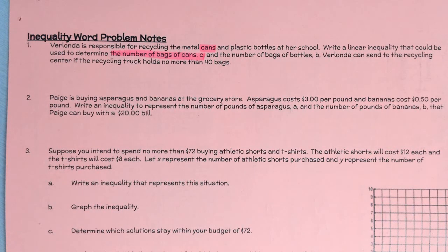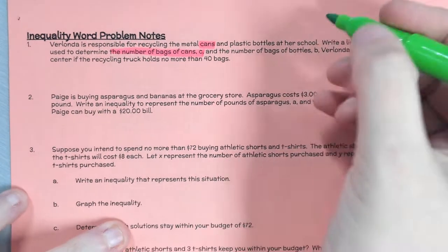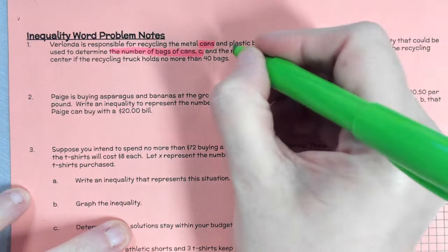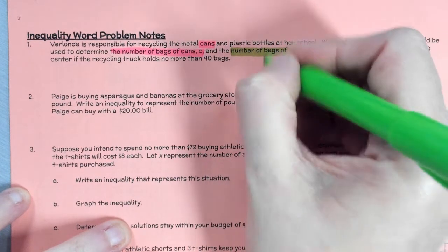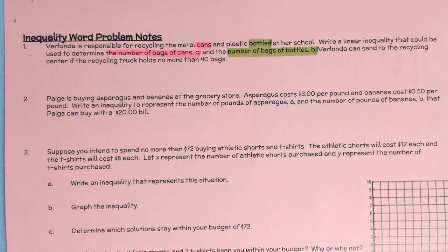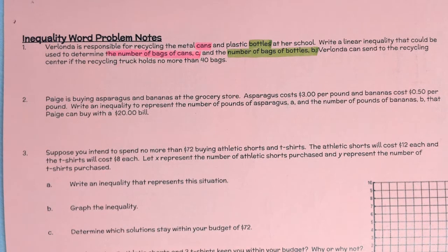The other variable they give me is the number of bags of bottles. So I'm going to highlight that, and then anywhere else I see 'bottles,' I highlight it too. This strategy may seem a little unclear right now, but when we get to the next problem it's going to start to make more sense why the two highlighters help.